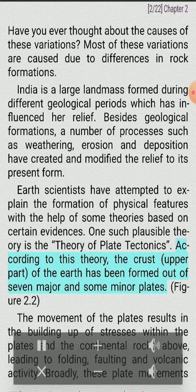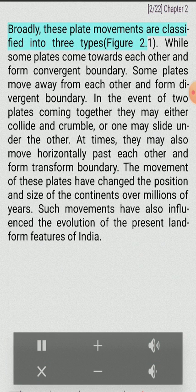According to this theory, the crust, the upper part of the earth, has been formed out of seven major and some minor plates. The movement of the plates results in the building up of stresses within the plates in the continental rocks above, leading to folding, faulting and volcanic activity. Broadly, these plate movements are of three types.